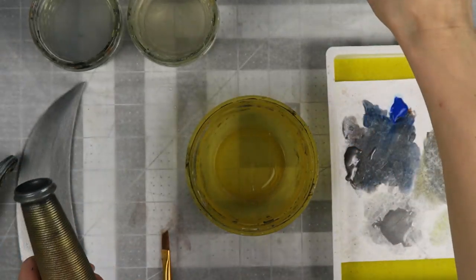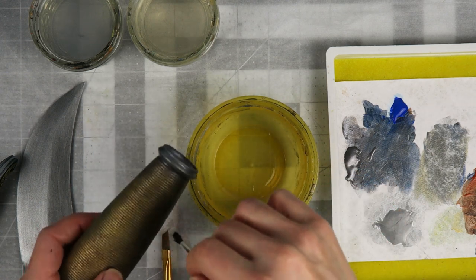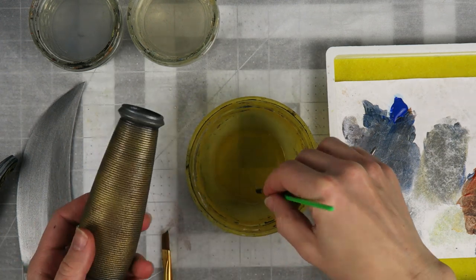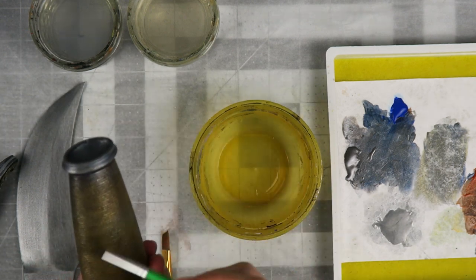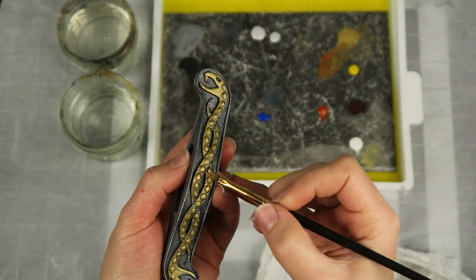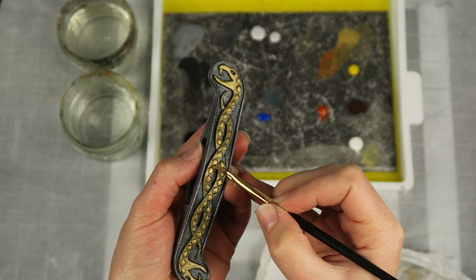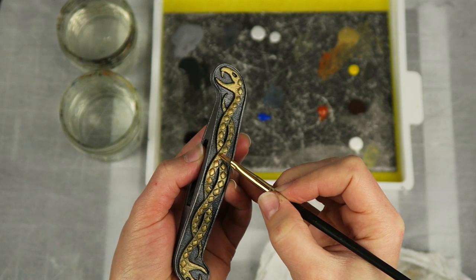Once I had a good base, I added some sealer over top of that so I could add more washes on top without damaging this base coating. On the serpents, I added orange gold highlights and cool gray shadows to build up the contrast in the color temperature.